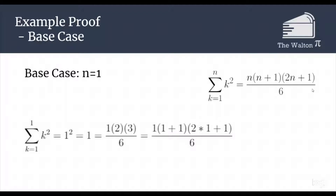The sum from k equals 1 to 1 of k squared is equal to 1 squared, which is equal to 1 times 2 times 3 all over 6, which is precisely what we would get if we were to replace every n with a 1 in our statement that we are trying to prove.